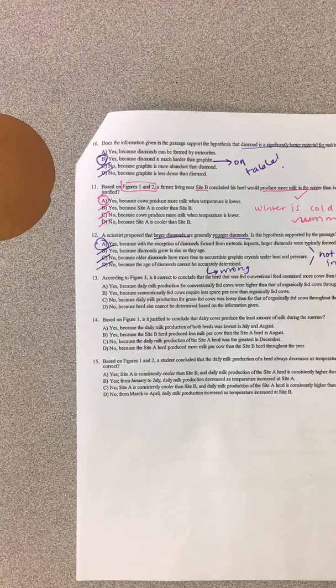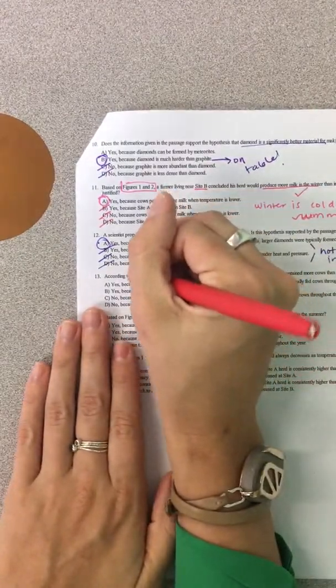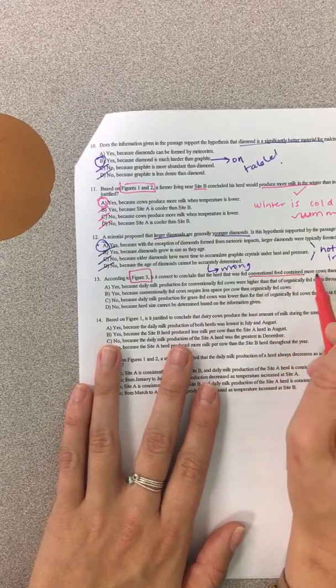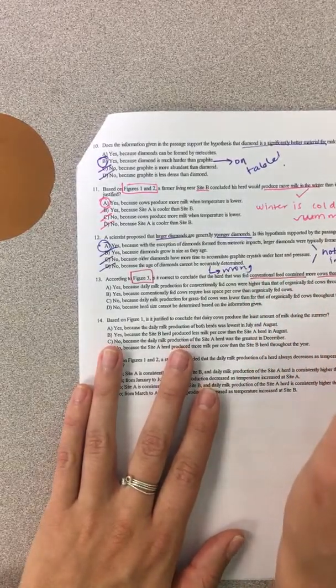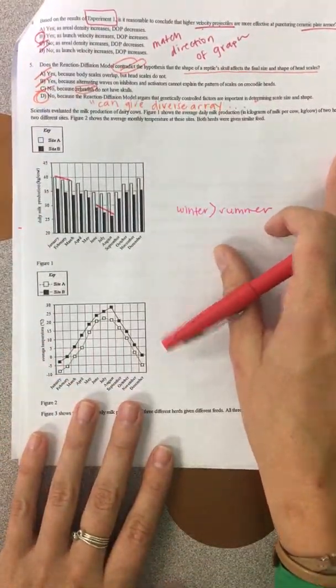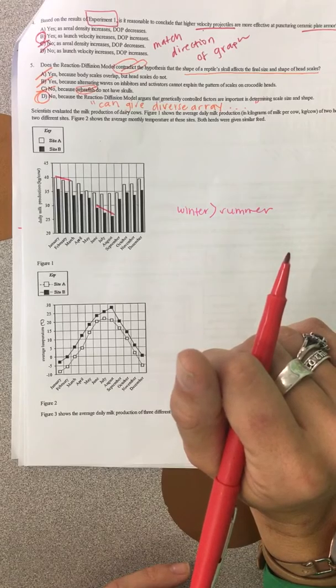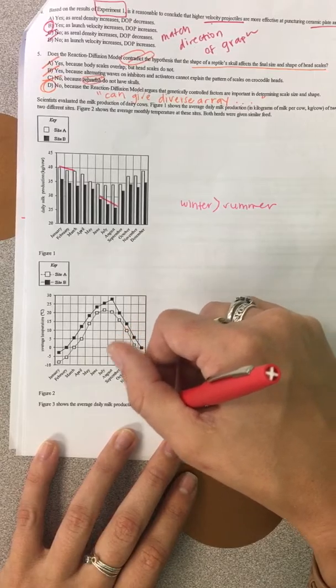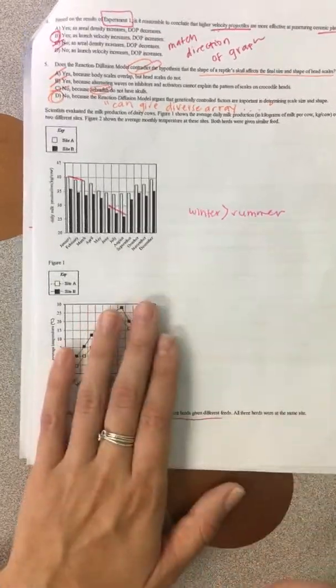Thirteen. According to figure three, is it correct to conclude that the herd was fed conventional feed contained more cows than the herd that was fed organic feed? So, let's see. It's telling us in figure three, but let's read about figure three first. Figure three shows the average daily milk production of three different herds given different feeds. All three herds were at the same site.